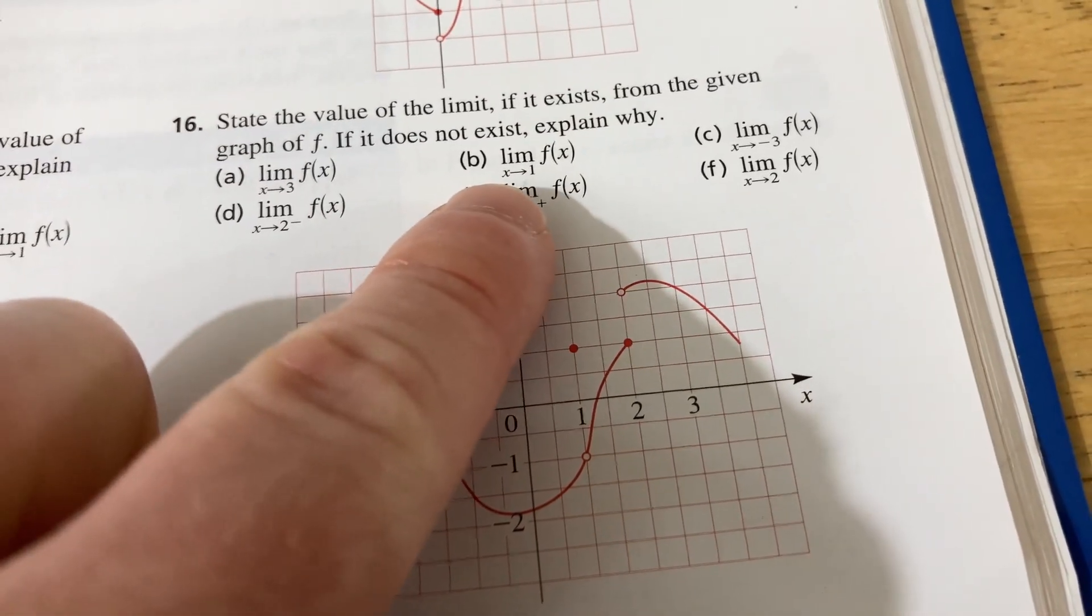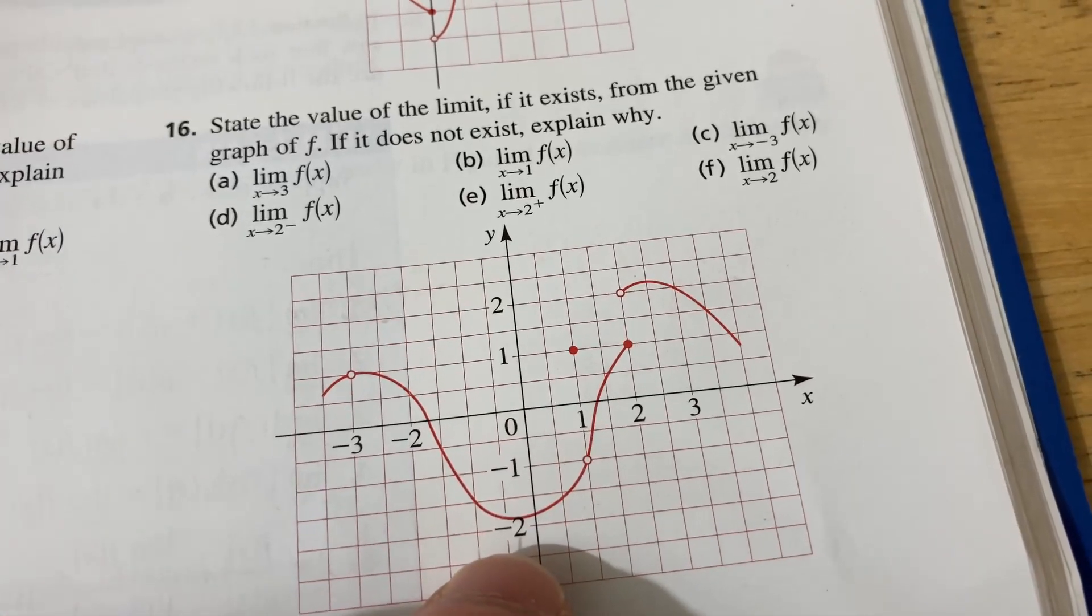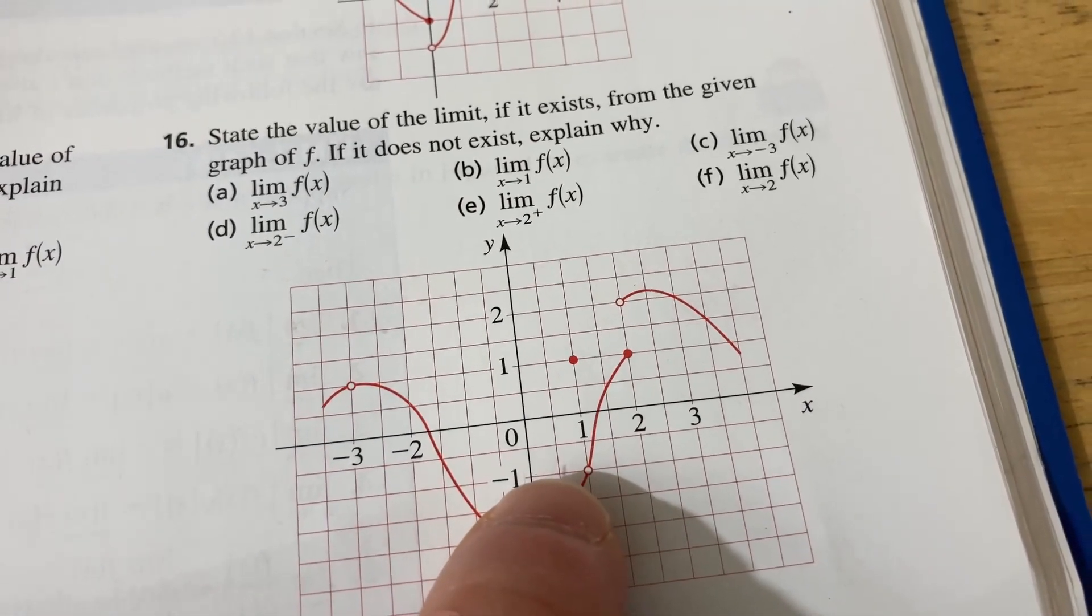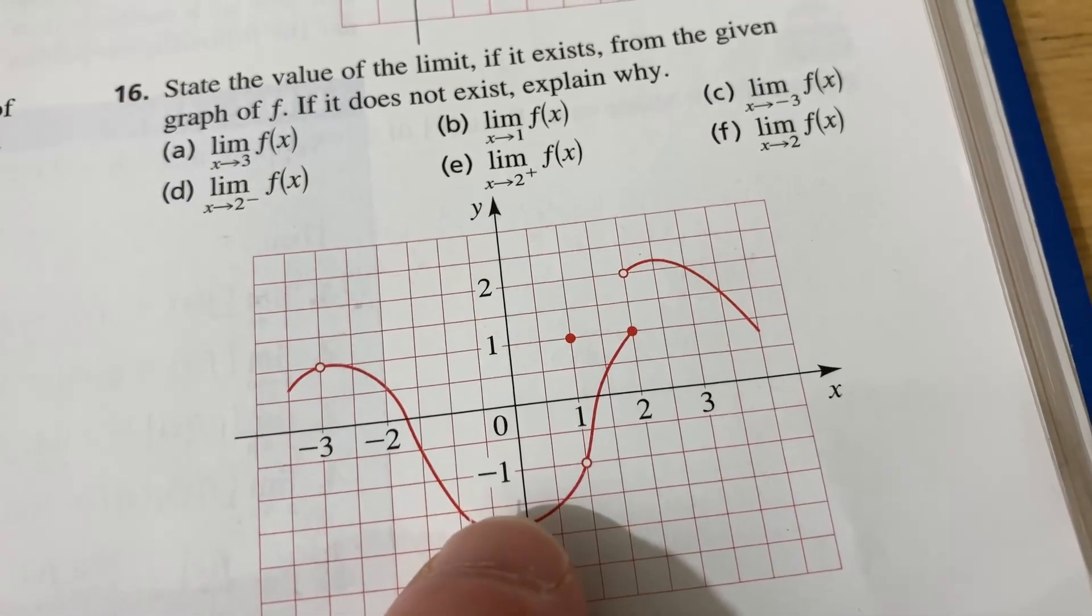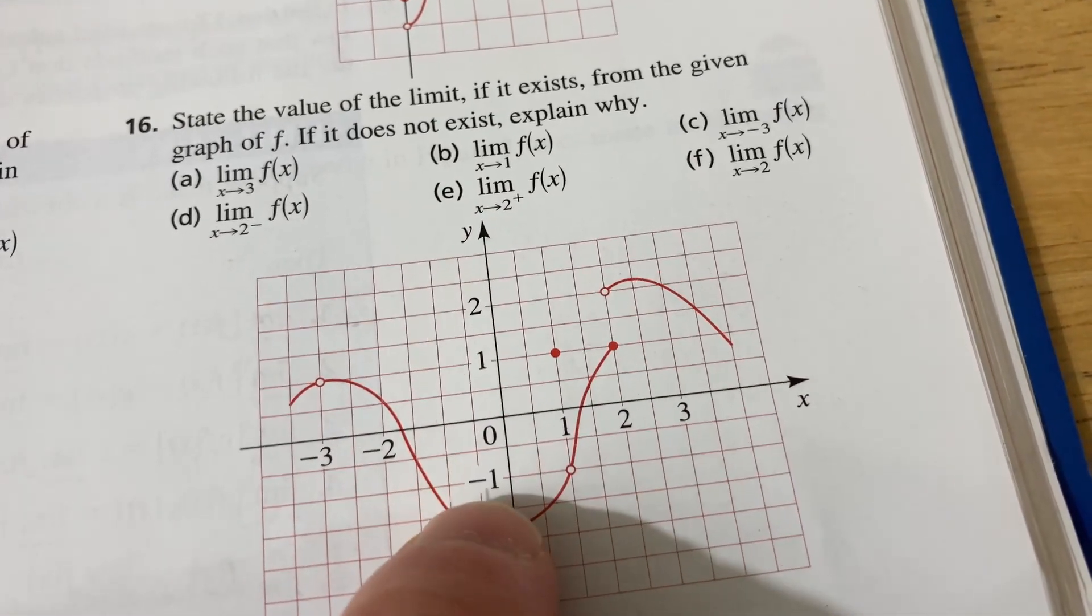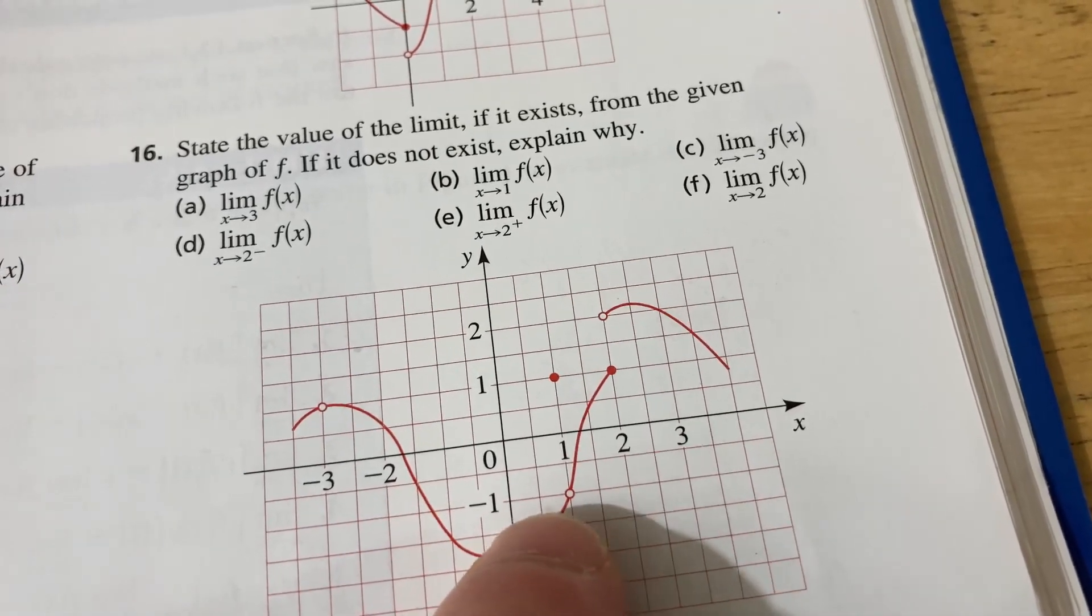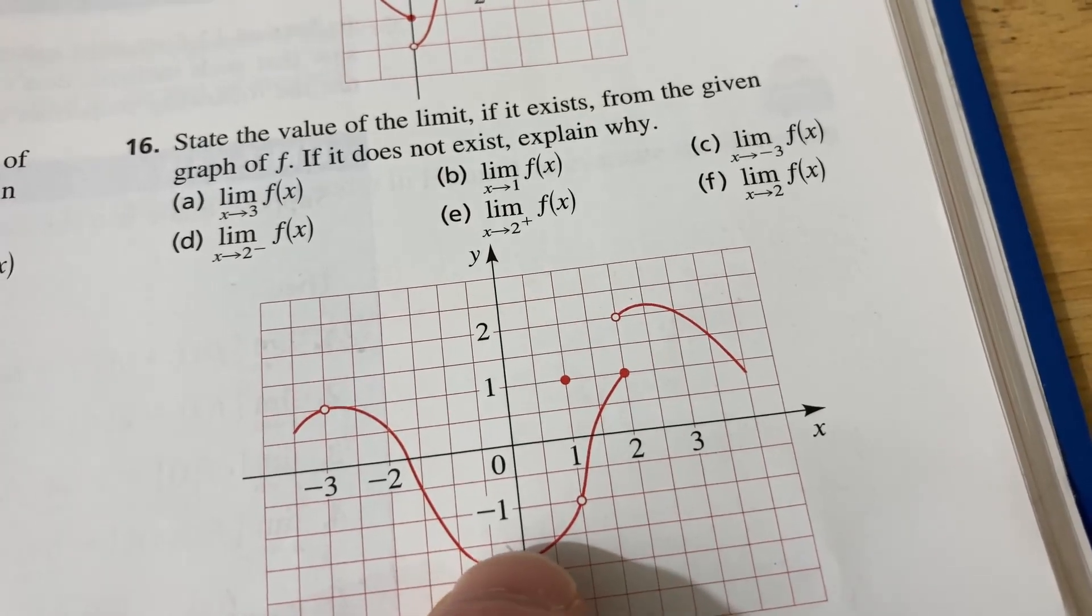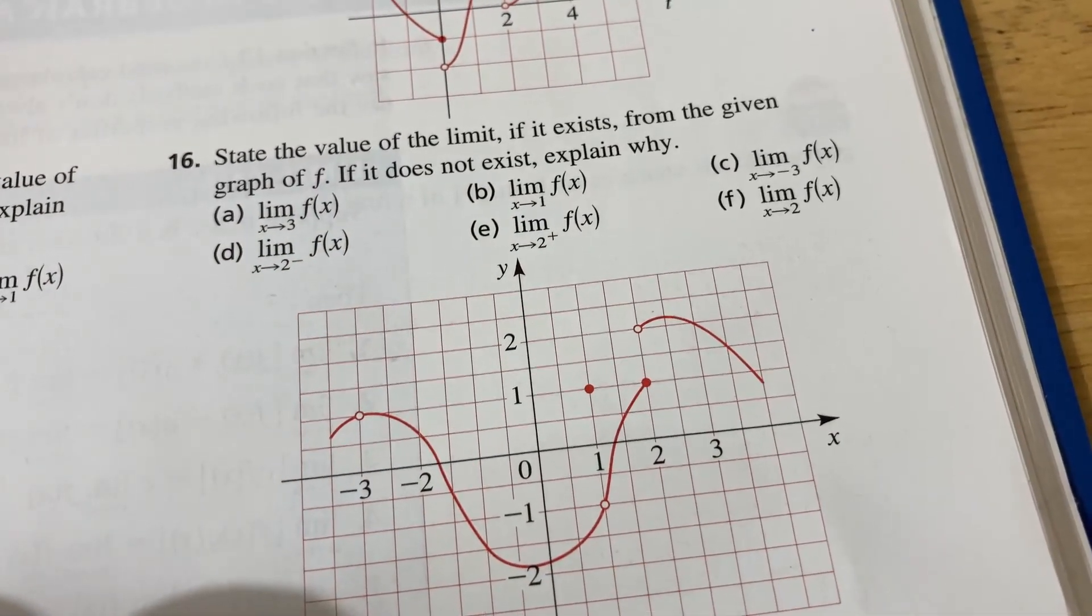So for example, part b, we have to find the limit as x approaches one of f of x. So as x gets really, really close to the number one, what is the y value getting close to? Well, it looks like it's getting close to negative one. You might say there's a hole there at negative one, so it doesn't exist. It doesn't matter. We only care about what happens to the y values when x gets close to one. We don't actually care about what happens at x equals one. So even though there's a hole here when x gets really, really close to one, the y values get closer to negative one. So the answer to part b is negative one.